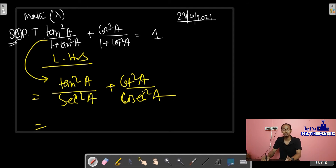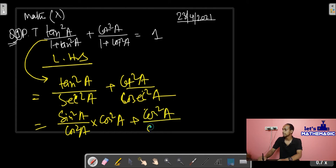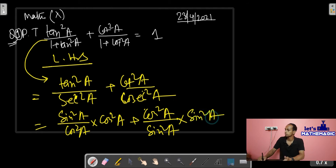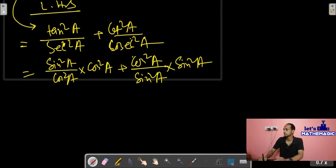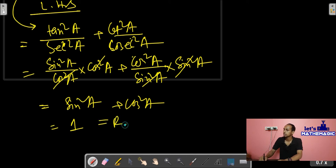Now I'll break everything into sine and cos. Tan²A means sine²A by cos²A, and since there was sec² in the denominator, taking it to the numerator gives cos²A. Similarly, cot means cos by sine, so it's cos²A by sine²A, and since there was cos² in the denominator, taking it to the numerator gives sine²A. If we cancel cos²·cos² and sine²·sine², we are left with sine²A plus cos²A, which equals one. Hence it's proved.